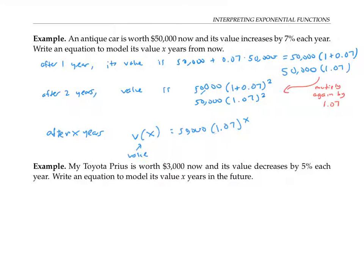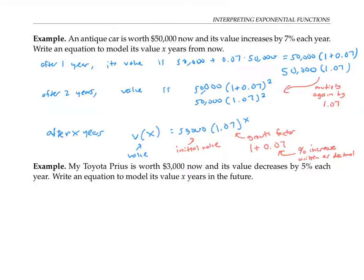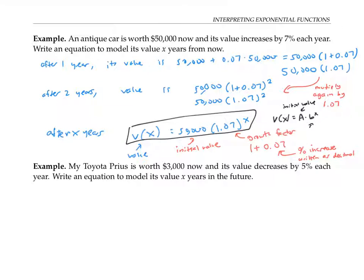If we dissect this equation, we see that 50,000 comes from the original value of the car. The 1.07, which I call the growth factor, comes from 1 plus 0.07. So the form of this equation is an exponential equation: V of x equals a times b to the x, where a is the initial value and b is the growth factor.